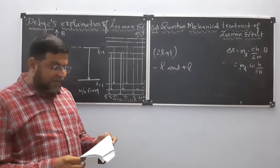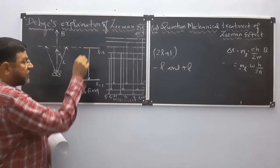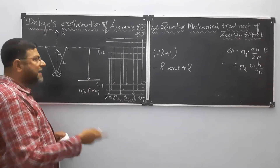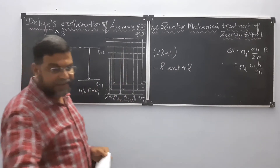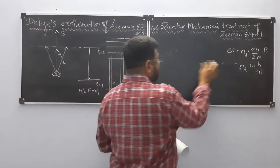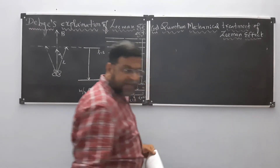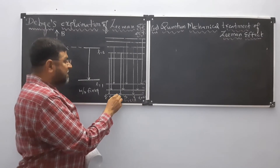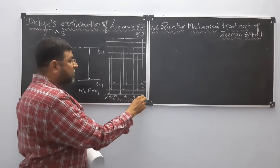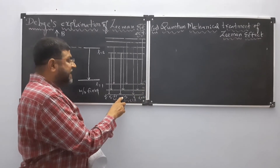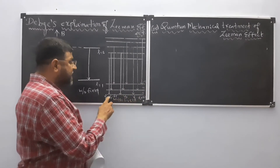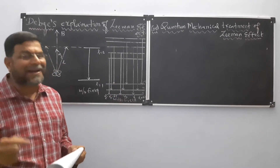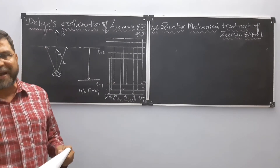Before the application of an external field, there is a single energy level — only one line. When the field is applied, it splits. In the energy level diagram with field applied, the energy levels are expressed as μe = μ₀ − Δν and μ₀ + Δν. There is a gain and a loss in energy when you apply the magnetic field. This clearly explains the quantum mechanical treatment given by Debye.